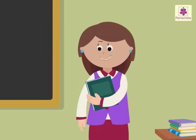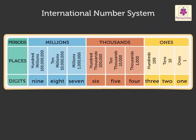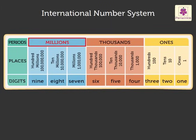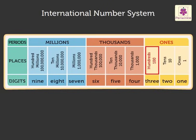Now let us look at the international number system. Look at this table. It shows the periods, the places, and the digits. Seven digit numbers are placed in the ones, the thousands, and the millions periods. The ones period comprises of ones, tens, and hundreds. The thousands period comprises of thousands, ten thousands, and hundred thousands.